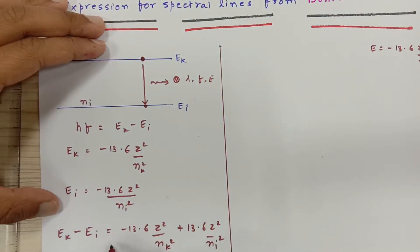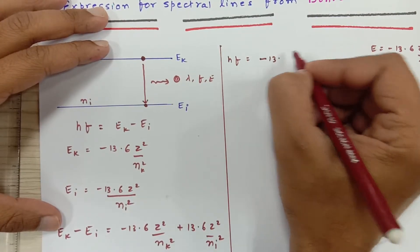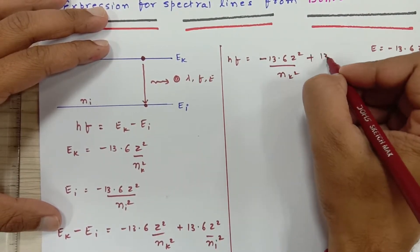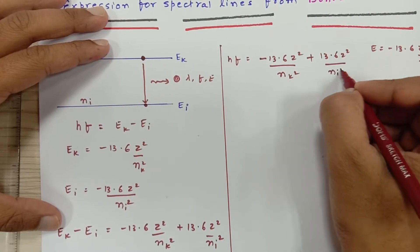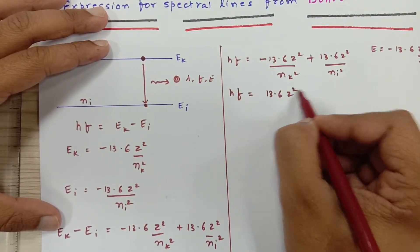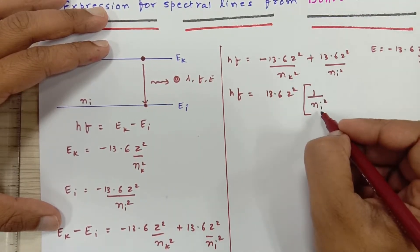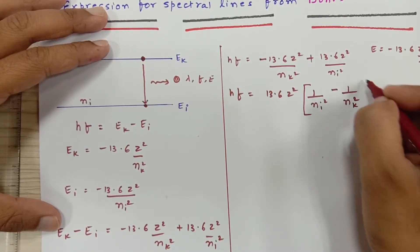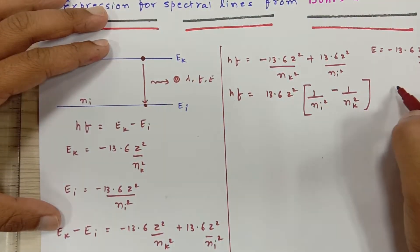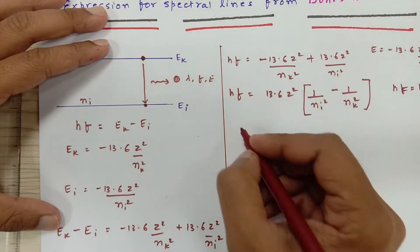This difference in energy can be written as Hf. So Hf equals 13.6 Z² times (1 upon Ni² minus 1 upon Nk²), where Ni is the lower energy orbit and Nk is the higher energy orbit. Now Hf can also be written as Hc over lambda, so instead of frequency you can also write the wavelength.